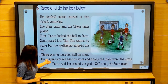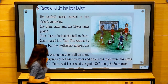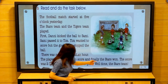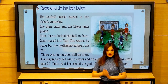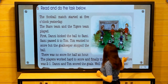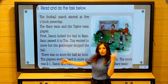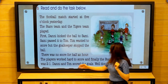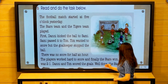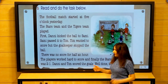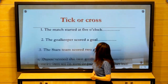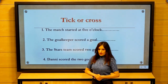The players worked hard to score, and finally the Stars won. The Stars team won. The score was two-one. Danny and Tame scored the goals. Well done, the Stars team — they are the winners!